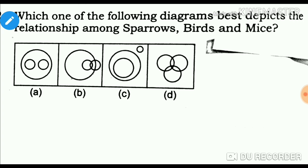Another example is the relationship among sparrow, bird, and mice. Sparrow means a bird, and of mice. I will explain it as a logical diagram.